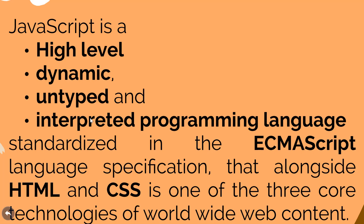The third term is untyped. By untyped we mean that we do not require associating a particular kind of data type to a variable. A variable is given the data type depending upon the content it is holding. If we assign integer data to a variable it will be of integer data type, and later if we assign a string to that variable it will be changed to a string data type. That's why we say it is untyped.